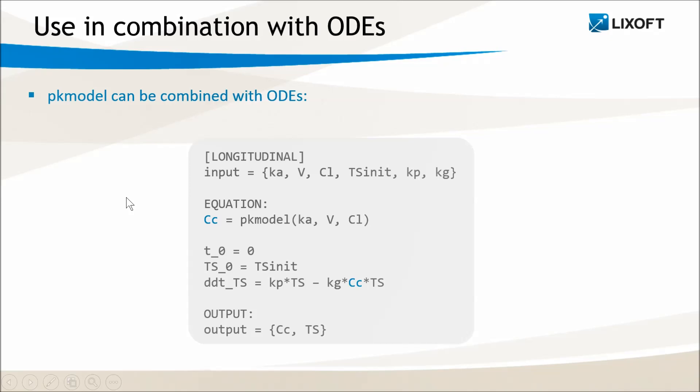In this example, I have defined a simple tumor growth inhibition model where the PK concentration Cc is defined via the PK model macro, and then Cc is used in the ODE system defining the behavior of the tumor size TS. Both Cc and TS are then outputted in this example to define a joint model.